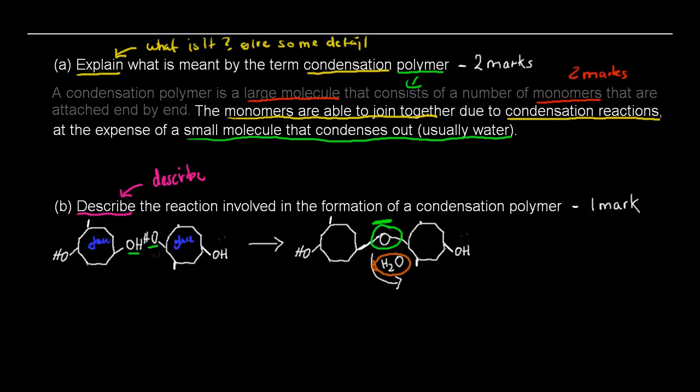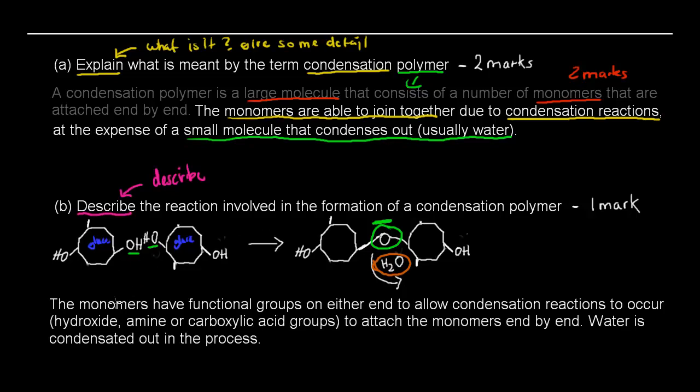But it's still important to make sure that you actually write something as well, even though it's only worth one mark. So, the monomers have functional groups on either end to allow condensation reactions to occur. The functional groups are these end groups here. And they are either hydroxyl, so that hydroxyl group is that OH group, amine, which is NH2, or a carboxylic acid group. You don't have to write that, but you can if you wanted to.